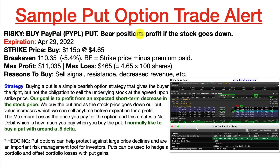Buy PayPal put. Bear positions profit if the stock goes down. Our expiration: April 29th. Our strike price: we're going to buy the $115 put at $4.65. Our break-even would be $110.35, which represents a 5.4% drop in the stock price. Looking at the profit graph, this dashed line here is the current price. The $110.35 is our break-even and break-even is the strike price minus the premium paid. Our maximum profit theoretically would be just over $11,000 if the stock dropped all the way down to zero. Our maximum loss is what we pay for the put, which would be $465.